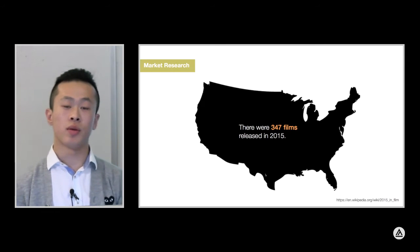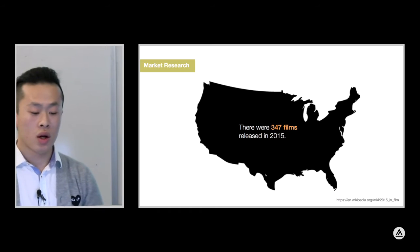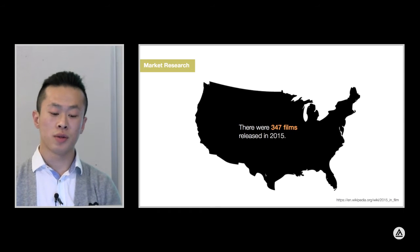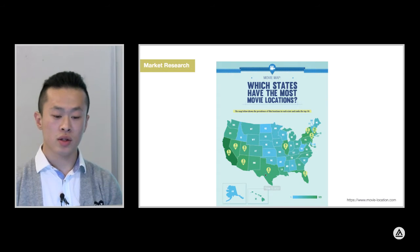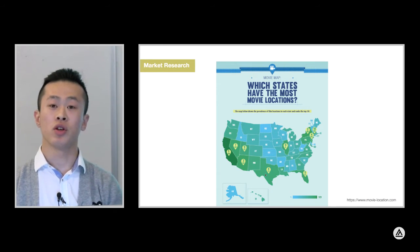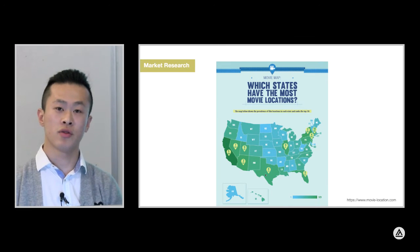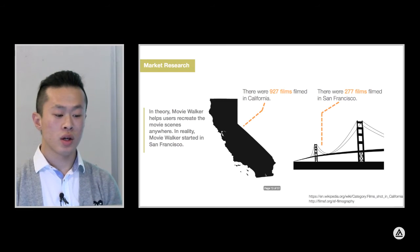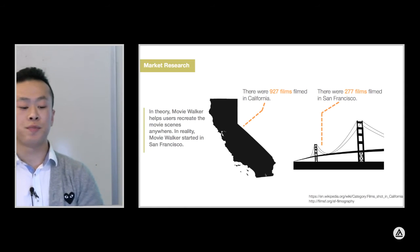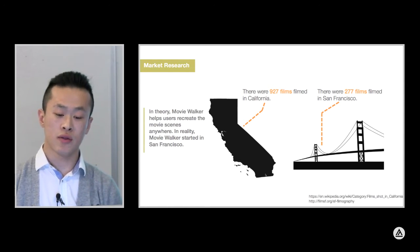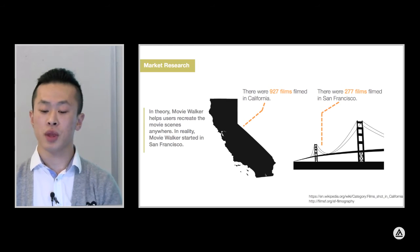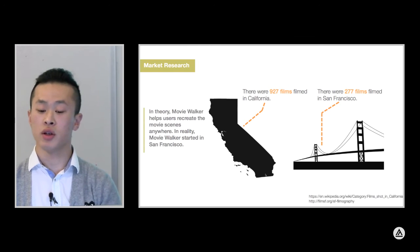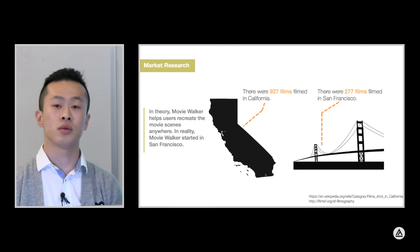Now let's move on to the market research. The data shows there were 347 films released last year, which is 2015. And guess which state has the most movie locations in the United States — California, it's number one. There were also 927 films filmed in California total in history, and 277 films filmed in San Francisco — also a total number in history.